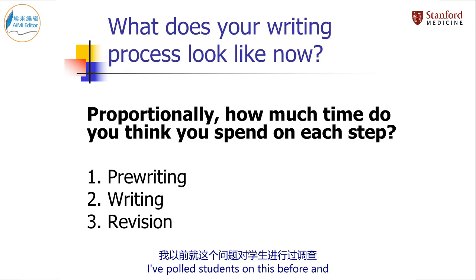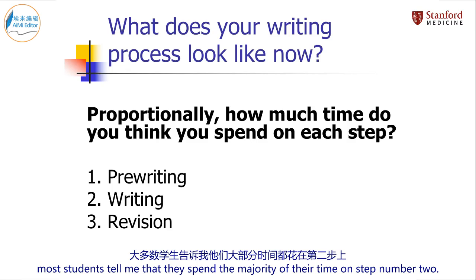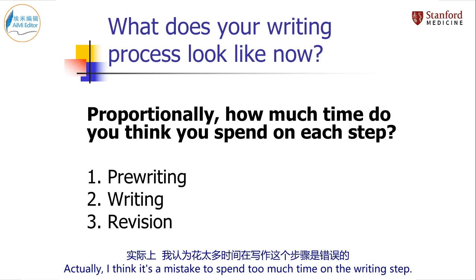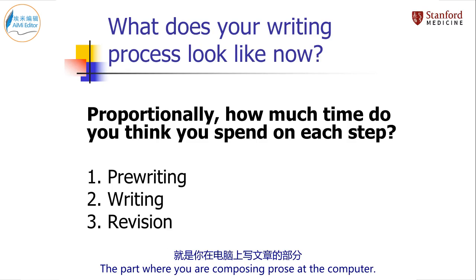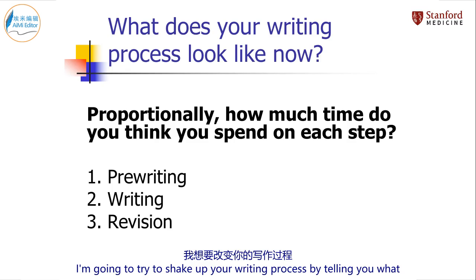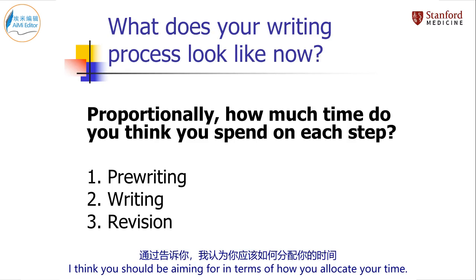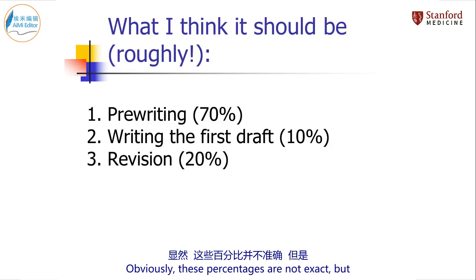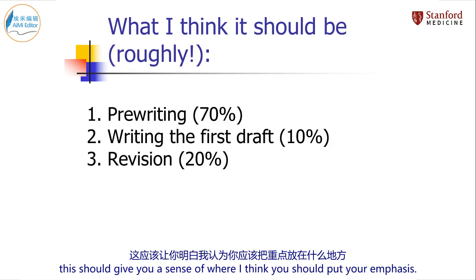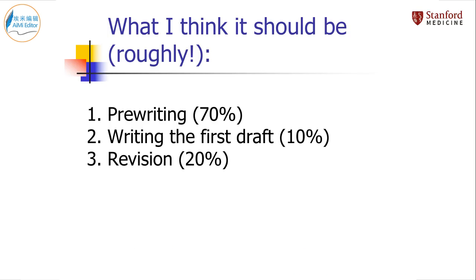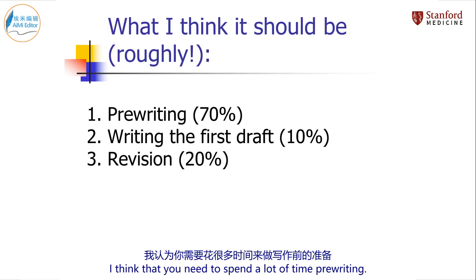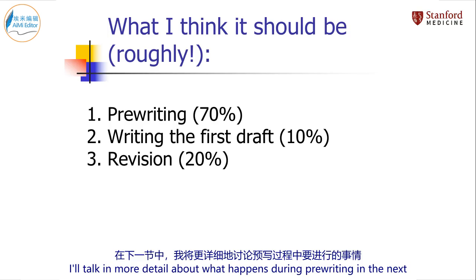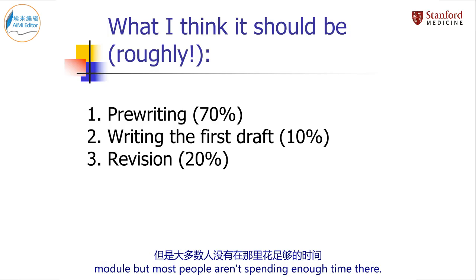I've polled students on this before and most students tell me that they spend the majority of their time on step number two — writing the first draft. Actually, I think it's a mistake to spend too much time on the writing step, the part where you are composing prose at the computer. I'm going to try to shake up your writing process by telling you what I think you should be aiming for in terms of how you allocate your time. This may surprise some of you. I think that you need to spend a lot of time pre-writing — in fact, the majority of your time should be spent in the pre-writing stage. Most people aren't spending enough time there.